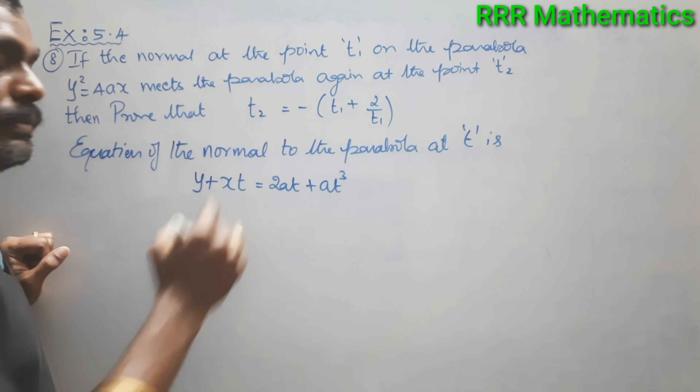The normal at point t1 is obtained by replacing t with t1. So the equation becomes: y + x·t1 = 2a·t1 + a·t1³.